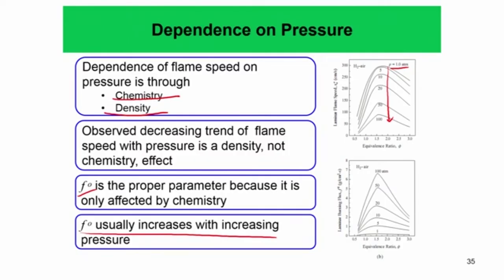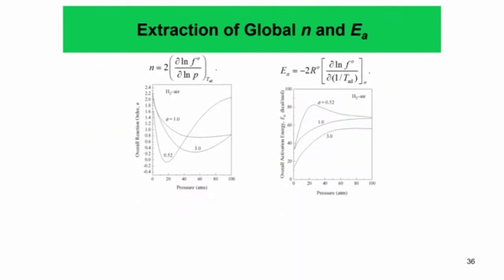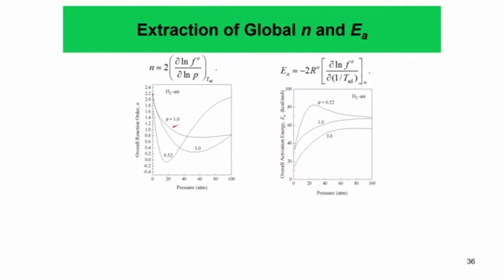So F₀ usually increases with increasing pressure and flame speed actually decreases with increasing pressure. Using the pressure dependence relationship, you can find out the global order of the reaction. The global order of the hydrogen-air reaction can be found this way — hydrogen-air combustion involves at least 9 species and 19 or 20 reactions, and the whole thing can be simplified into one reaction order using the burning flux and pressure dependence. Plotting this for different equivalence ratios, the global order starts from near 2 for larger equivalence ratio cases, then drops and can again increase. Because it is mostly less than 2, the flame speed decreases with pressure.